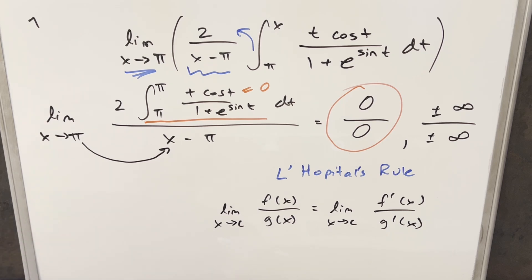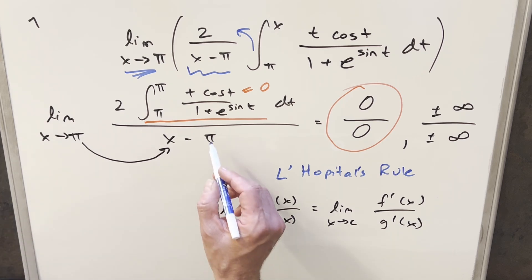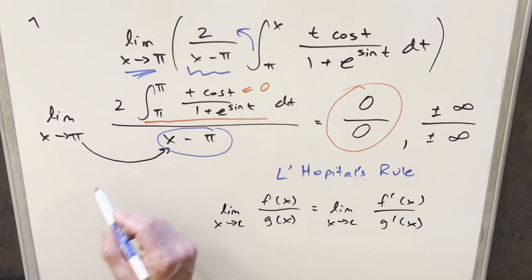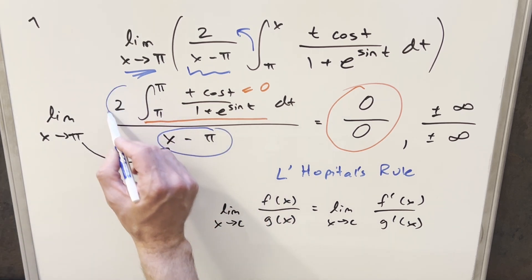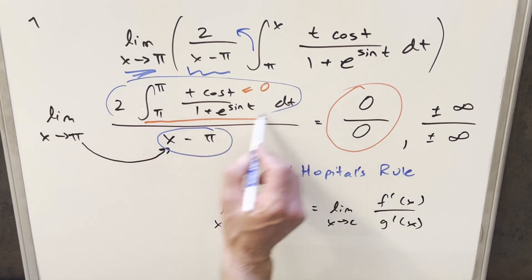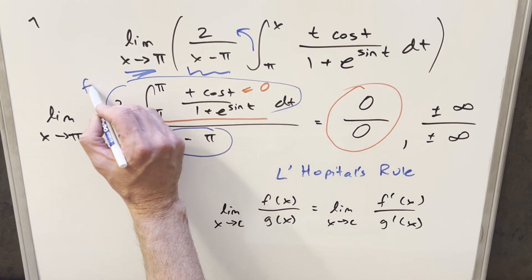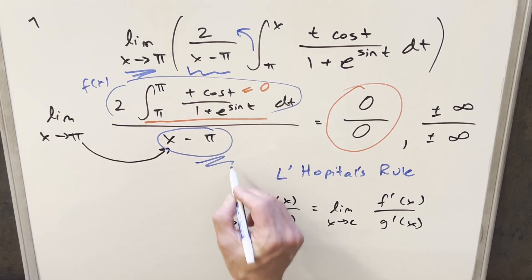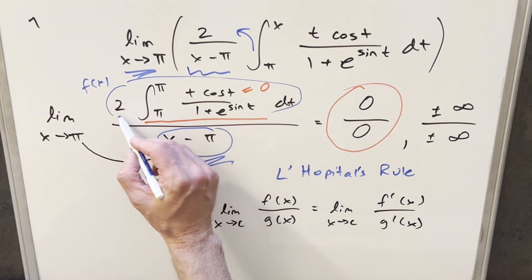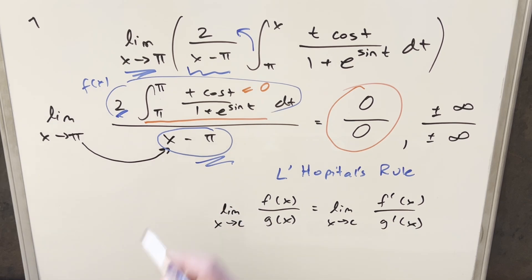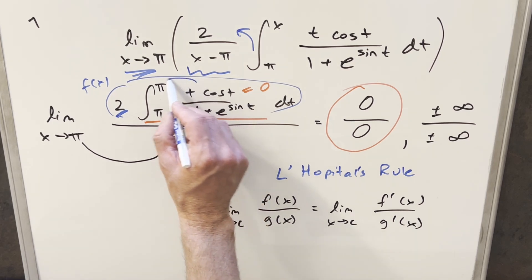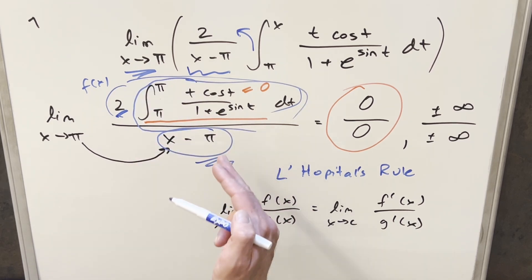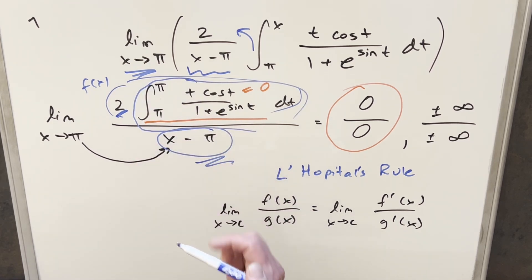To apply L'Hôpital's rule, all we need to do is get the derivative of g of x — our denominator — and the derivative of f of x, which is this whole numerator. The derivative of the denominator will be easy. The real issue is just taking the derivative of the integral expression, and for that we'll need the Fundamental Theorem of Calculus.